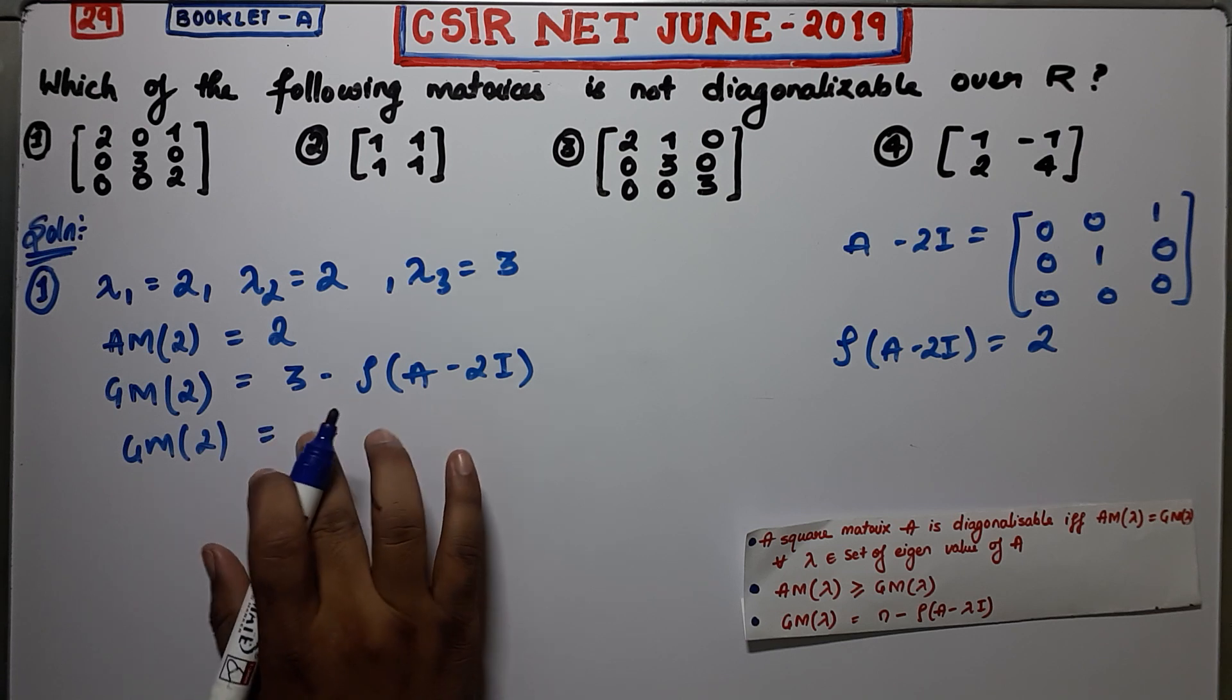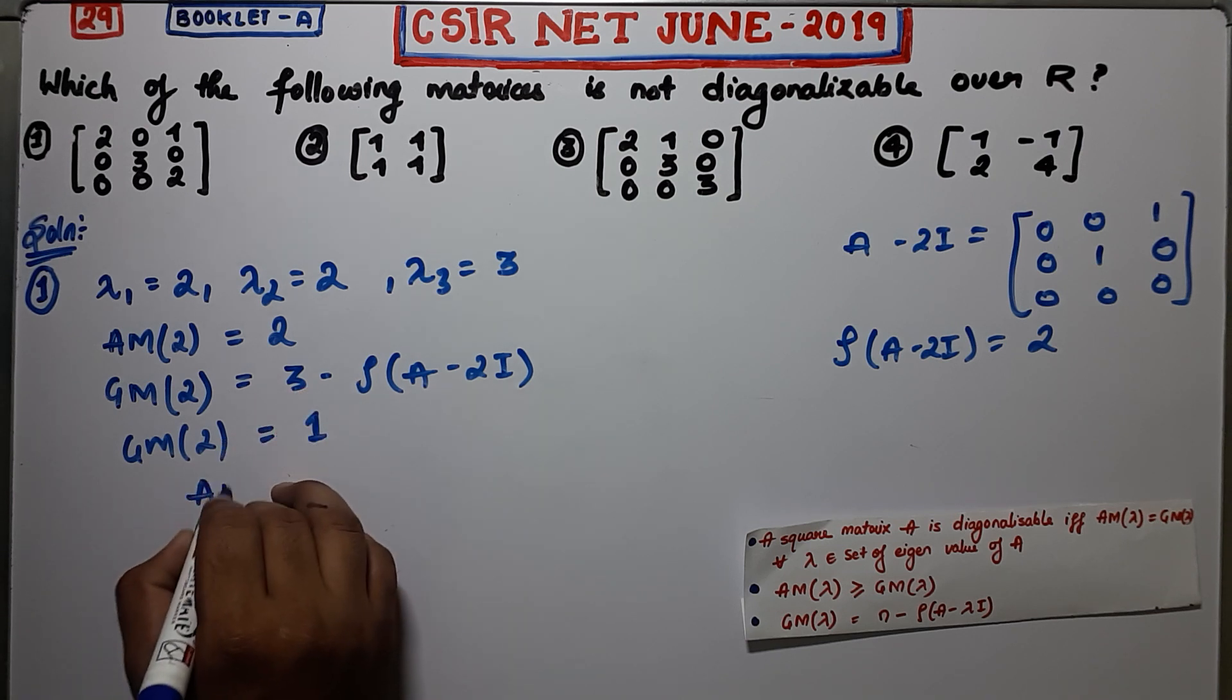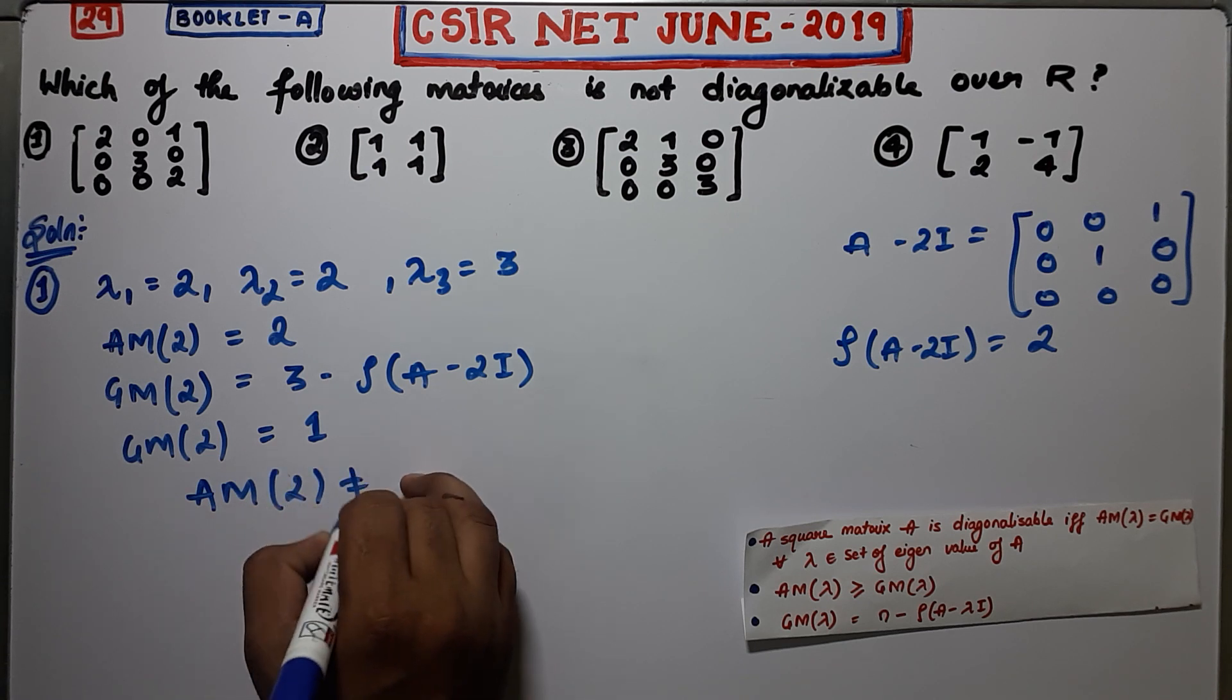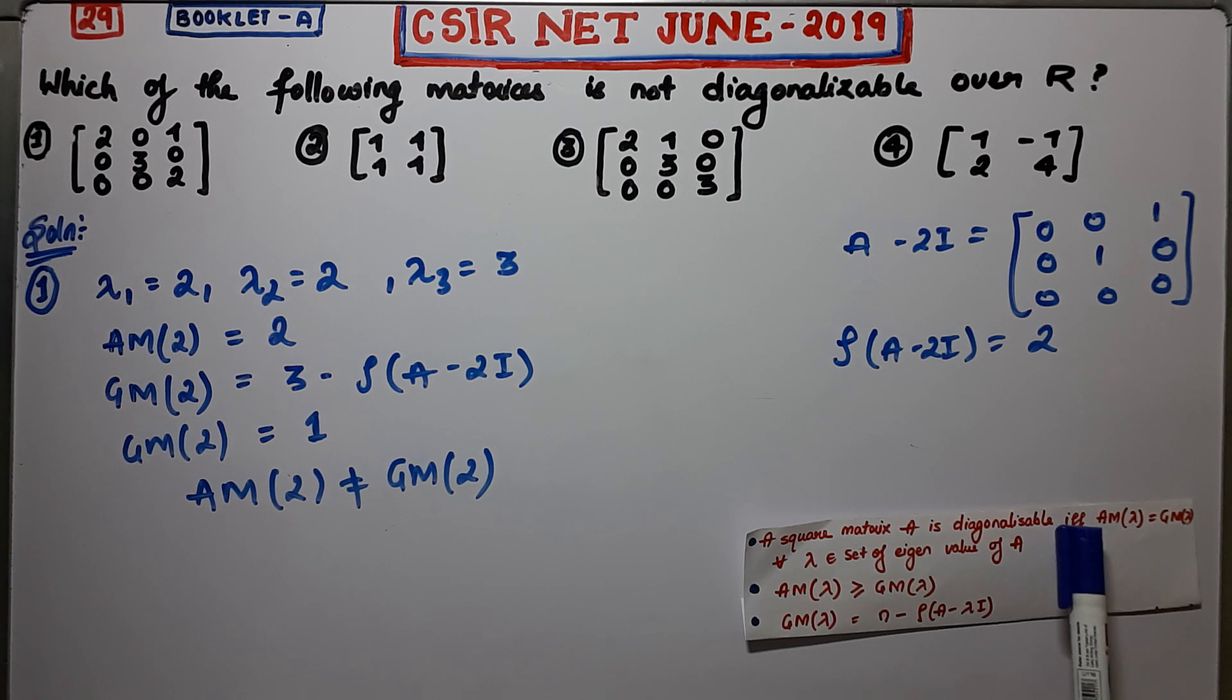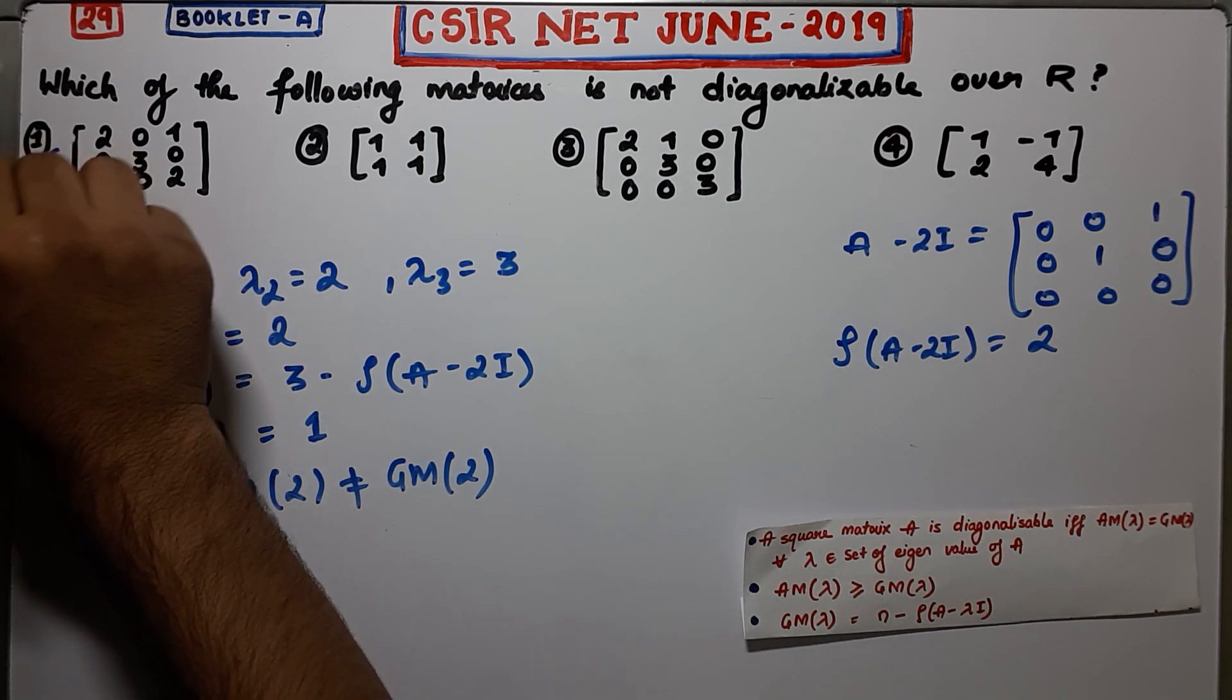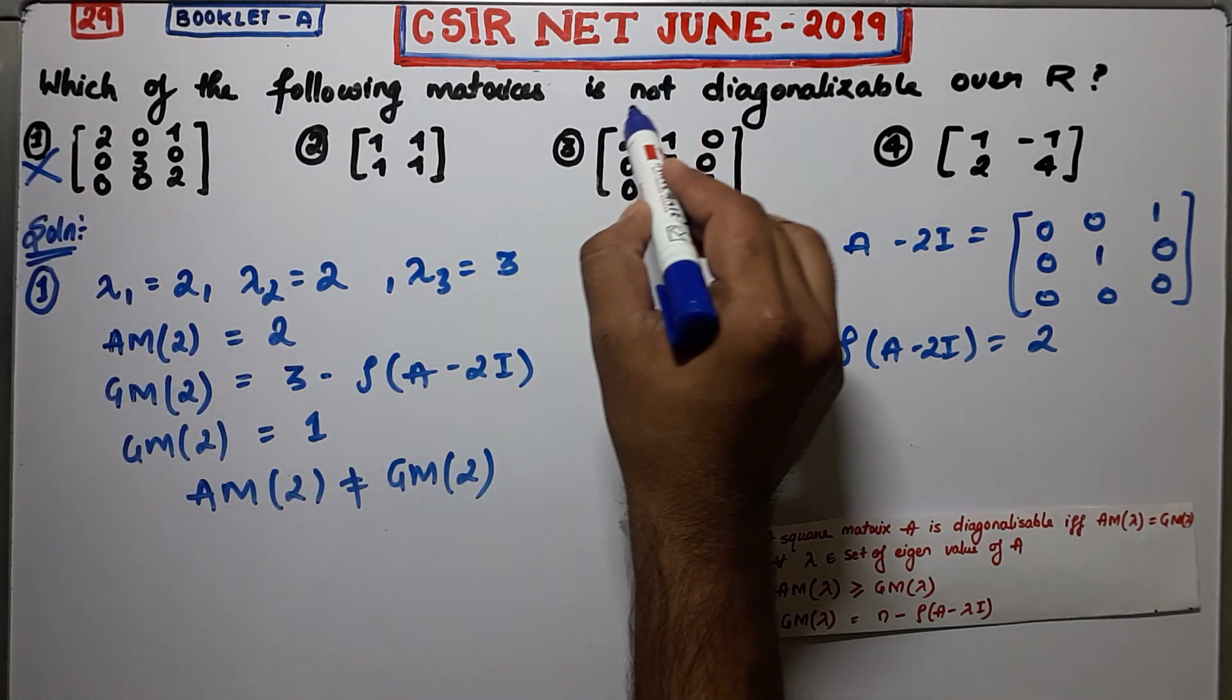Therefore geometric multiplicity is 1. Now you see, AM of 2 is actually not equal to GM of 2. Since this statement is an if and only if statement, from here you can conclude that your first matrix is not diagonalizable.